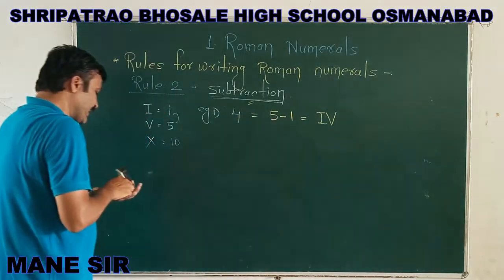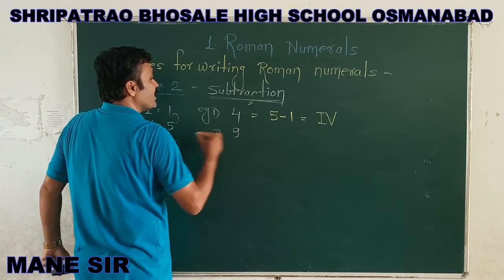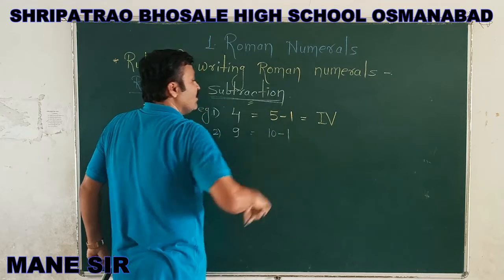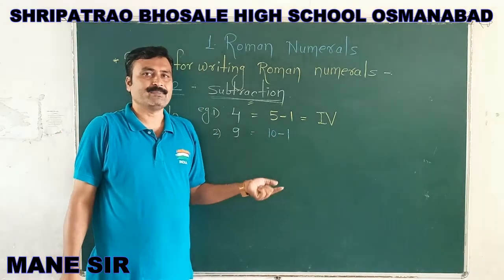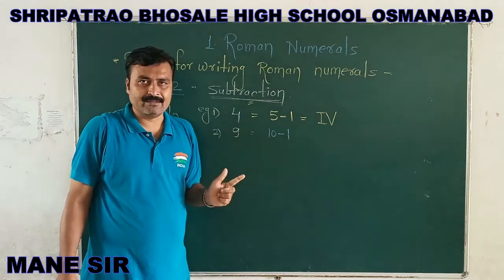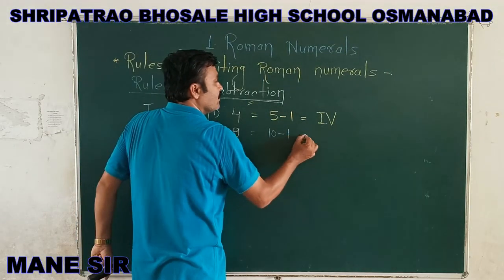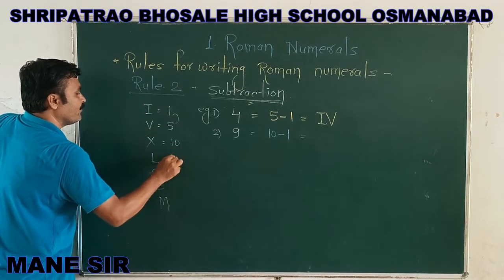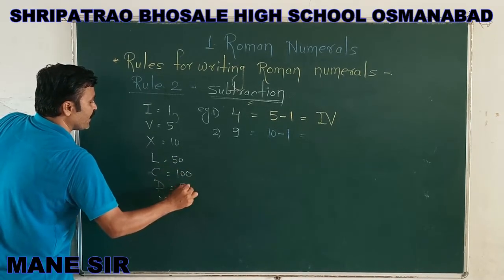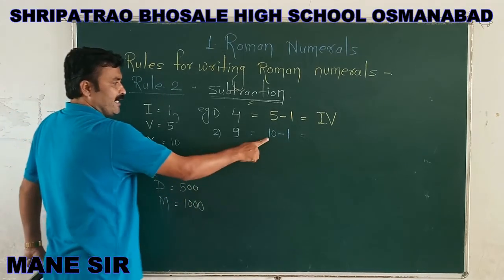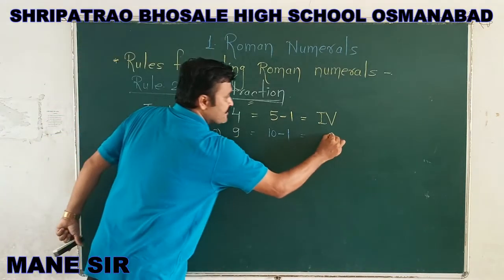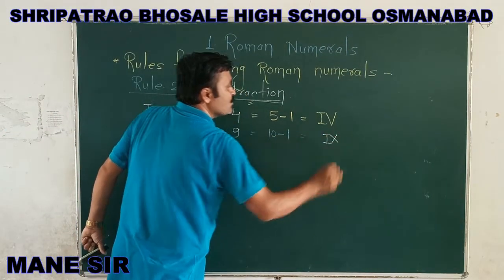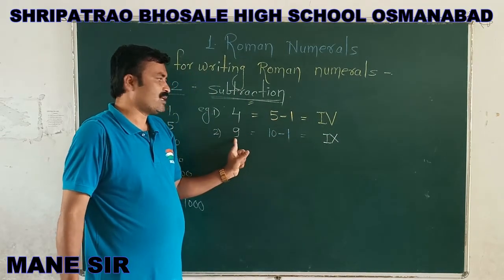The second example for this rule uses international number 9. For international number 9, the method is: 10 minus 1. As per mathematical calculation, 10 minus 1 gives us 9. We have to represent 10 minus 1 in Roman sign. For 10, we have X, and to represent minus 1, capital I is written before X. So I, X — in this way we get international number 9 in Roman numerals.